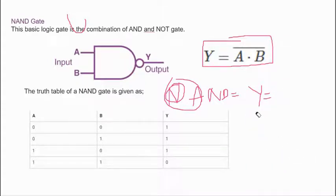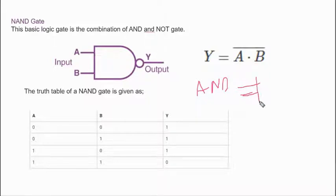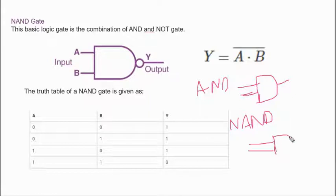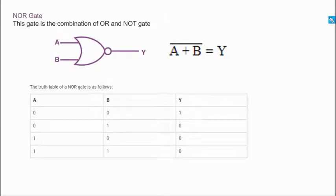If you practice 10 to 15 problems on each gate, you can surely solve them and fetch more marks in the examination. Remember the NAND gate diagram: it is like the AND gate symbol but with a small circle (cherry) added at the output — that circle represents the negation. Don't get confused; I'm explaining it in the easiest way. Next comes the NOR gate, which is also very easy.